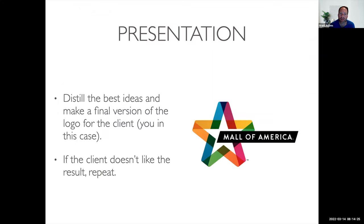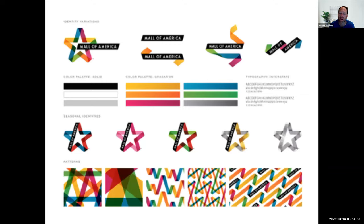Then we get to the presentation phase - you're distilling the best ideas, making that final version, and going to your client saying this is what your new logo is going to be. The client's going to either like it or not like it. Sometimes you have to go back and start fresh. This Mall of America logo is interesting because they thought through all kinds of logo conditions - the original, an unwrapped ribbon, and they change the colors depending on seasonal changes like Fourth of July, Valentine's Day, Christmas. The logo itself is very versatile.